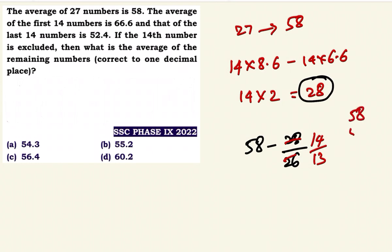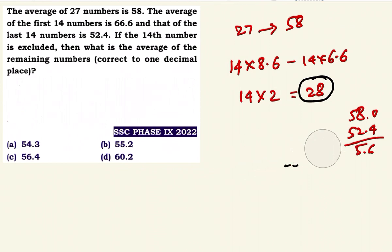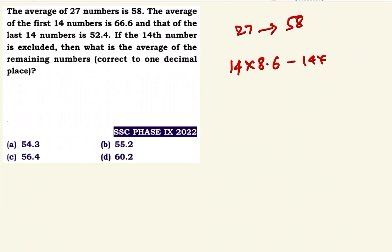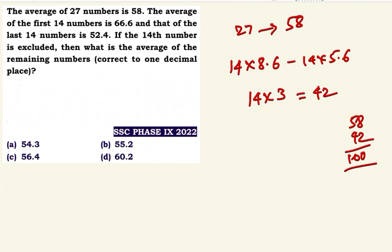So the first 14 numbers have deviation 8.6 and the last 14 numbers have deviation 5.6. Overall deviation is 14 into 3 — that is, 8.6 minus 5.6 equals 3, times 14 equals 42. So the 14th number is 58 plus 42 equals 100. Then the average of remaining 26 numbers is 58 minus 42 divided by 26.